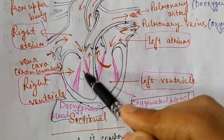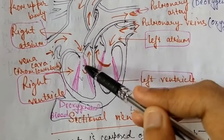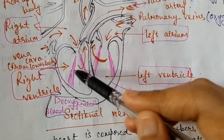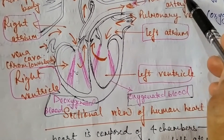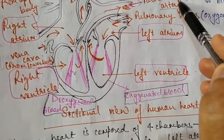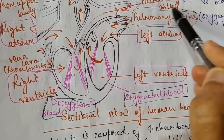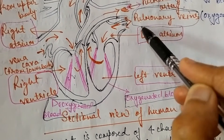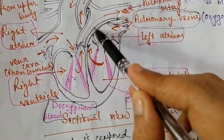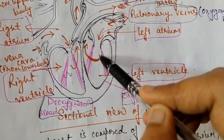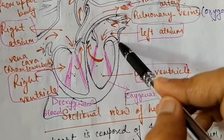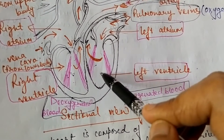Deoxygenated blood from the right ventricle goes through the pulmonary artery to the lungs. This is impure, deoxygenated blood that travels via the pulmonary artery to the lungs. After the lungs, the blood becomes oxygenated. This oxygenated blood then returns through the pulmonary vein to the left atrium.